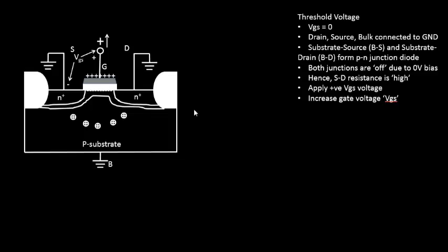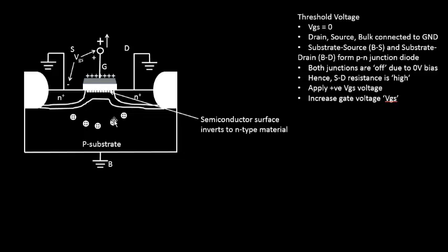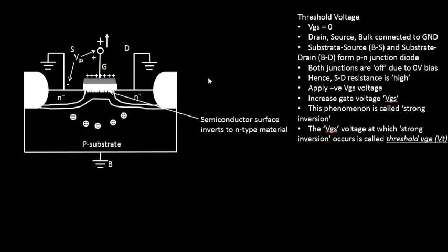As we push the first layer of negative charges to the region underneath the gate, we see accumulation of negative charges in a similar fashion. As the gate voltage increases, the depletion charge width keeps increasing. There is a gate voltage at which the semiconductor surface inverts into an n-type material — on a completely P-type substrate you find a small region that becomes completely n-type. This phenomenon is referred to as surface inversion or strong inversion.